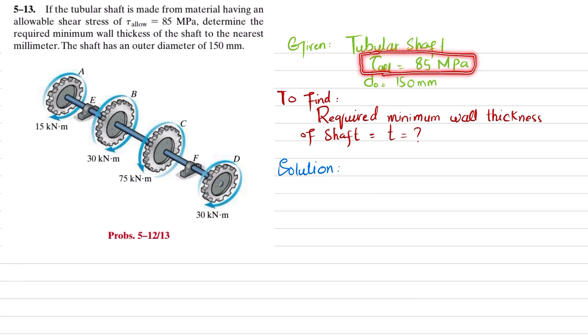What you have to find is required minimum wall thickness of the shaft, t. So let's start with the solution. We will first find the torque in shaft AB, torque in shaft BC, and torque in shaft CD.